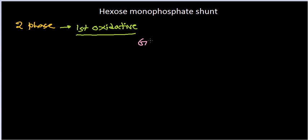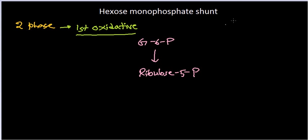If you begin with glucose 6-phosphate, it is converted into ribulose 5-phosphate. The number present indicates the number of carbons in that carbohydrate — glucose has 6 carbons, ribulose has 5 carbons. This process requires the presence of 2 NADP, which is reduced to NADPH. So glucose 6-phosphate is converted into ribulose 5-phosphate, and one carbon molecule is released as carbon dioxide.